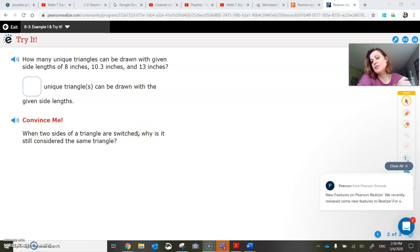This is pretty simple. If you have a triangle with side lengths of 8, 10.3, and 13 inches, that's only one unique triangle that you could draw with those given side lengths.